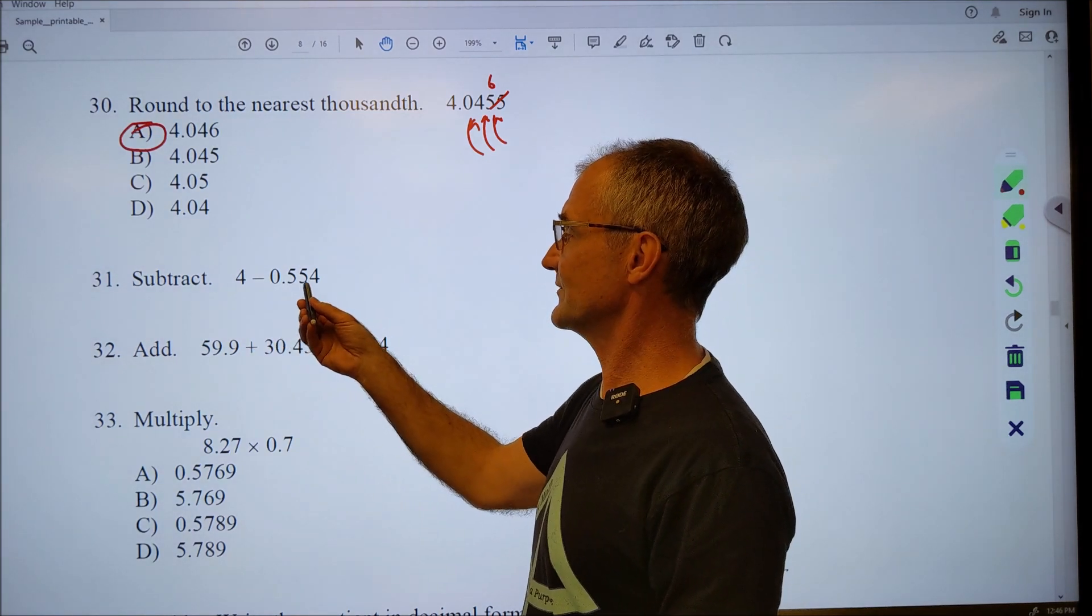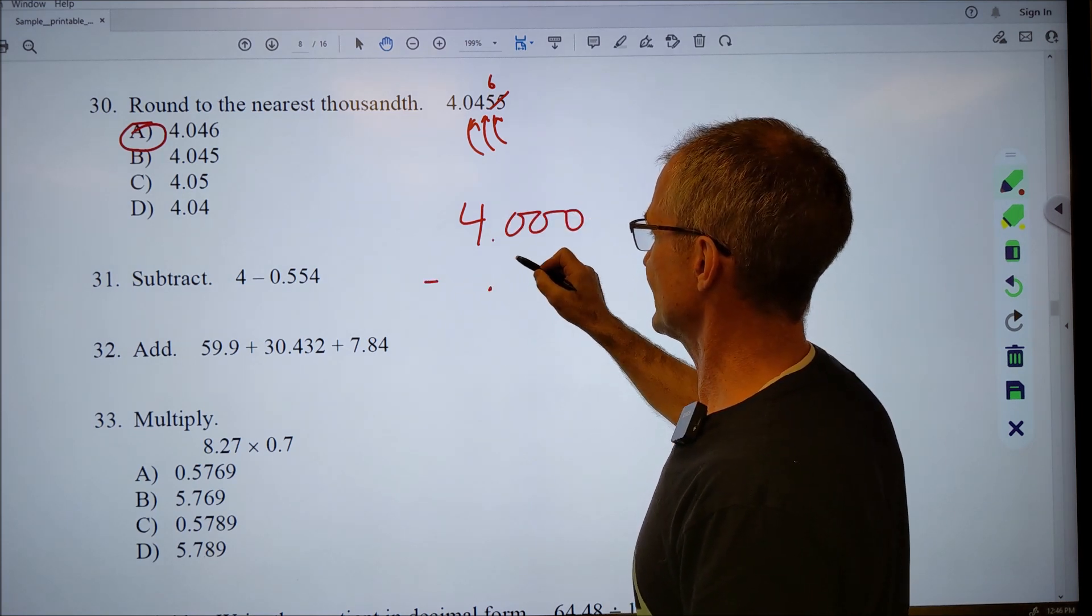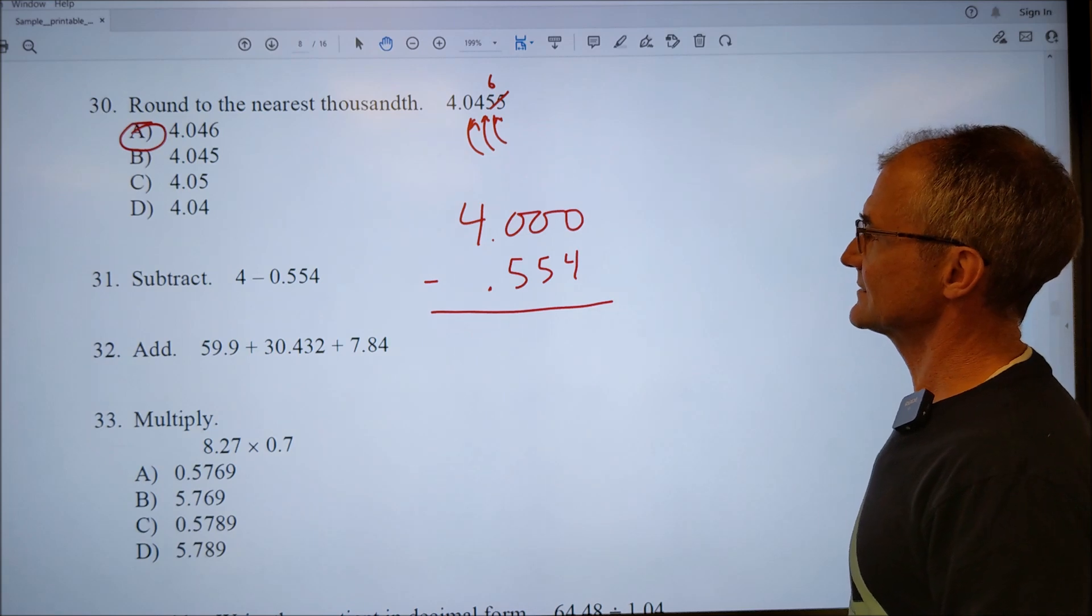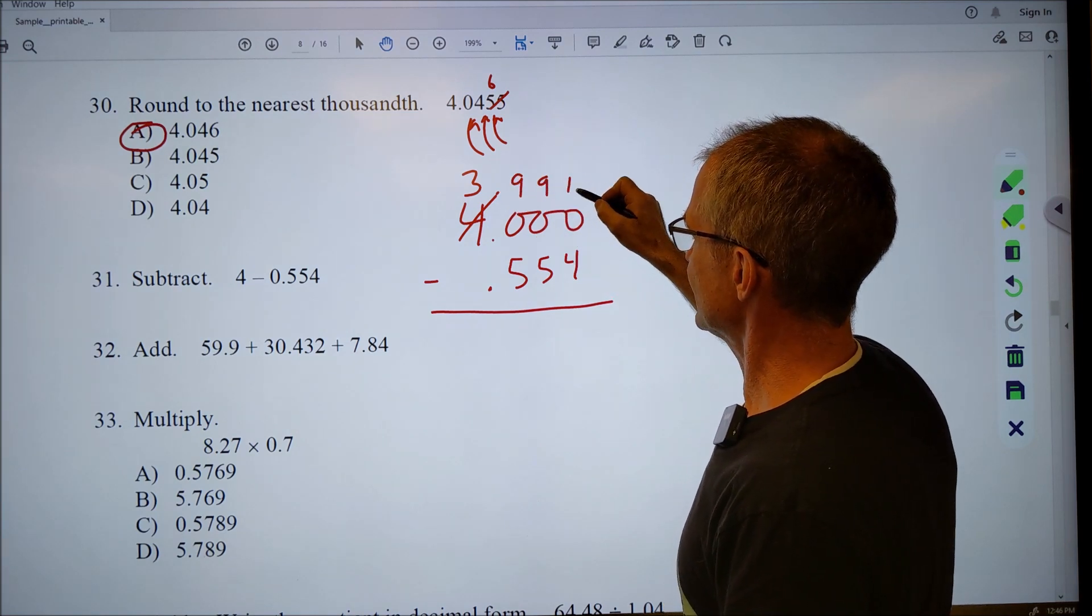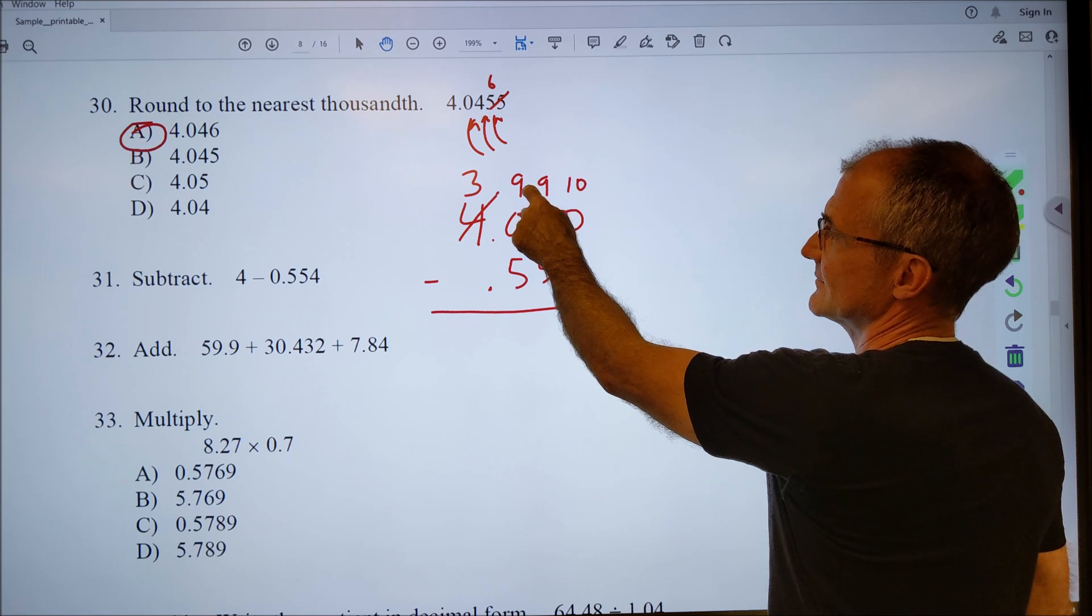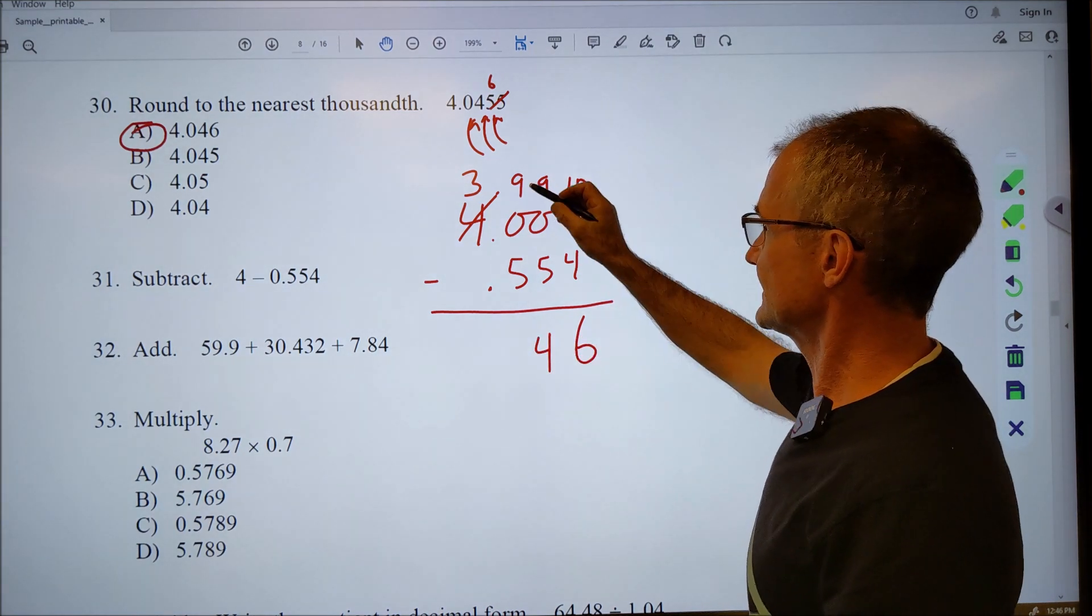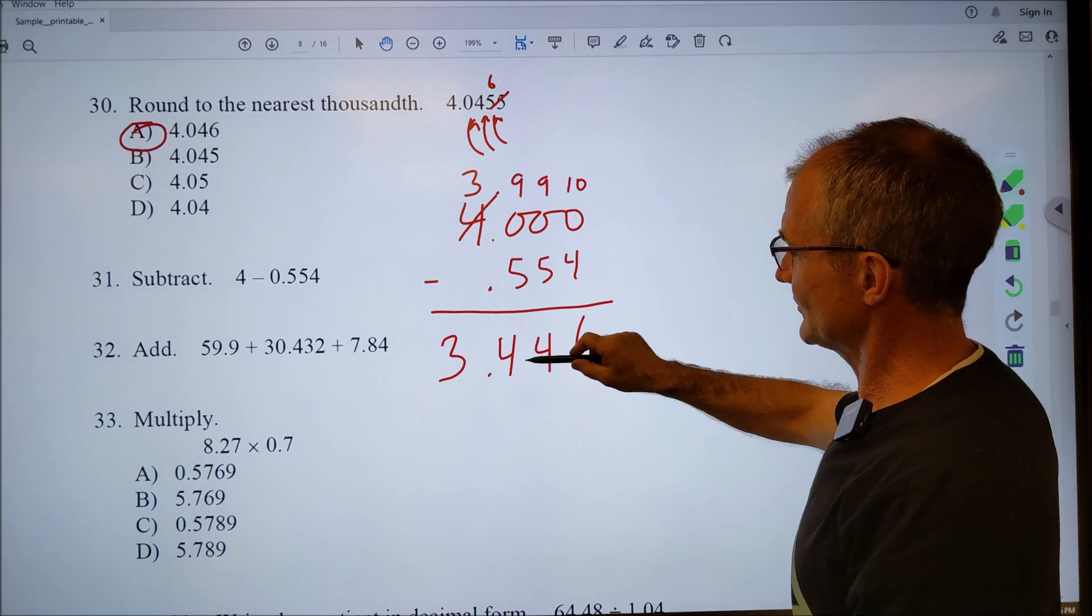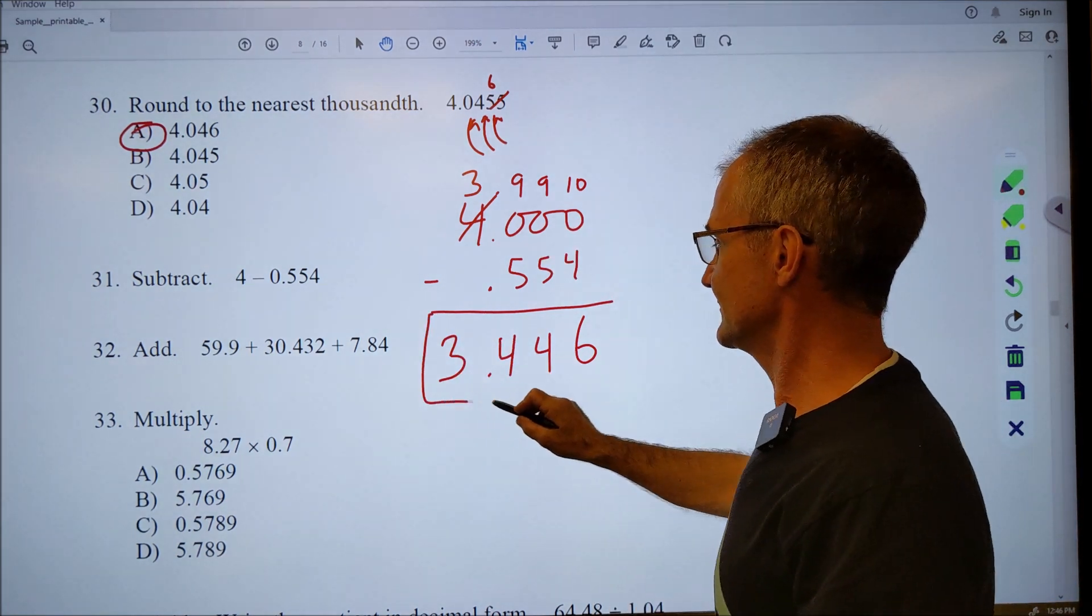Thirty-one. Subtract .554 from four. So I'm going to do 4.000 minus .554. So I can't do zero minus four, so I have to start borrowing. So what I'm going to do is I'm going to borrow a full unit from here and make this a 3.9910. That ten in the thousandths will give me a hundredths. The full unit in the hundredths will give me in the tens place. And ten right there is going to give me the four. So then I do ten minus four to get six, nine minus five to get four, nine minus five to get four, and then three minus zero. So my answer is 3.446. And I can see when I add that .446 to the .554, it's going to give me a full four. So the answer to thirty-one is this right here.